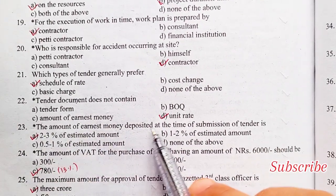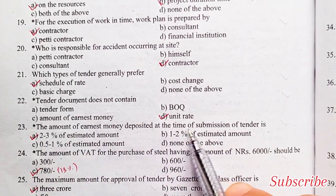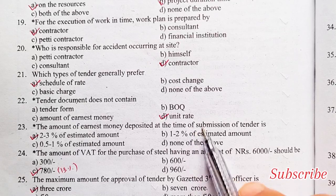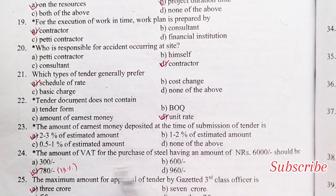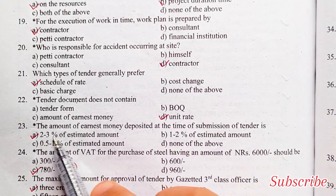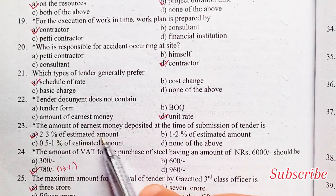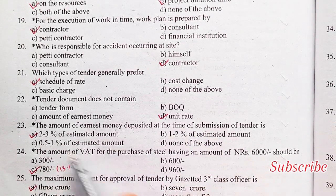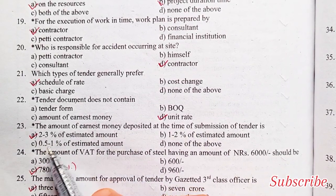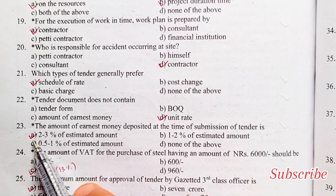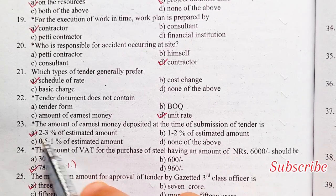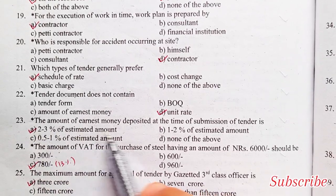The amount of earnest money deposited at the time of submission of tender is: 2% to 3% of estimated amount, 1% to 2%, or 0.5% to 1%. Option A is the right answer — 2% to 3% of estimated amount.